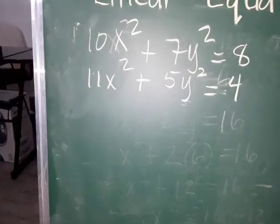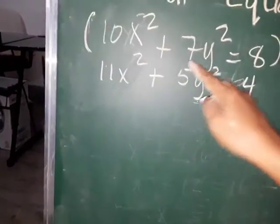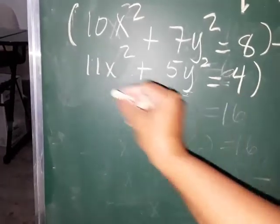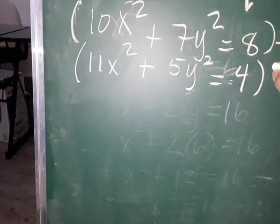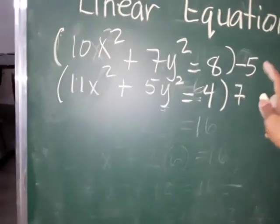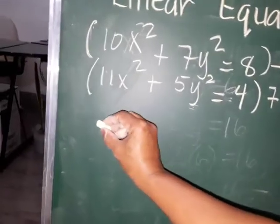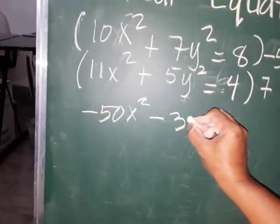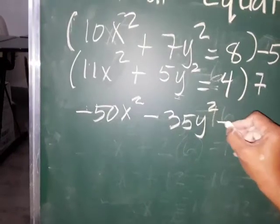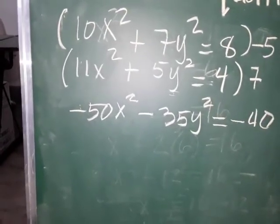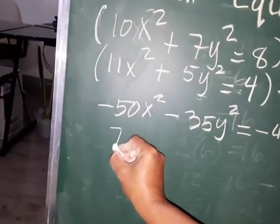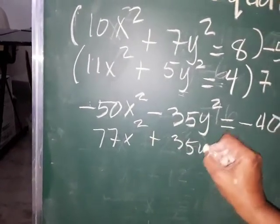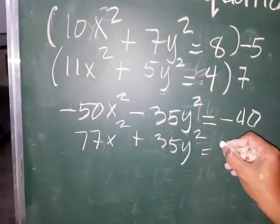We're going to multiply both equations. For the first equation, multiply by negative 5. For the second equation, multiply by positive 7. So: negative 5 times 10x squared is negative 50x squared, minus 35y squared is equal to negative 40. Next, 7 times 11 is 77x squared, plus 35y squared is equal to 4 times 7, which is 28.